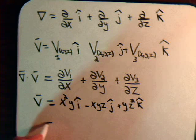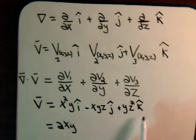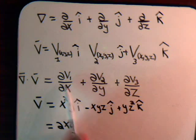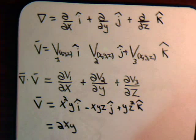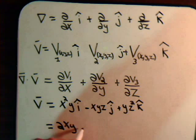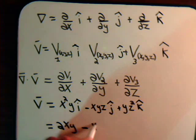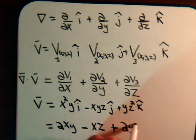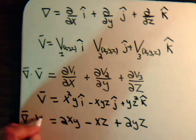Using our general formula, the partial of V1 with respect to x is 2xy, then minus the partial of the j-component with respect to y gives minus xz, and plus the partial of the k-component with respect to z gives 2yz. That would be the divergence of the vector.